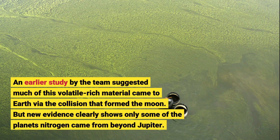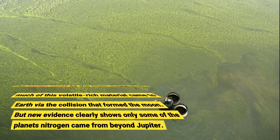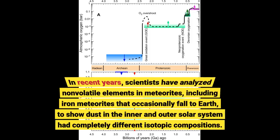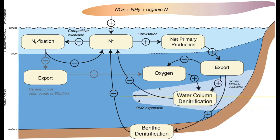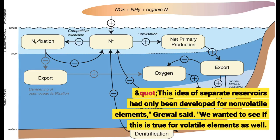But new evidence clearly shows only some of the planet's nitrogen came from beyond Jupiter. In recent years, scientists have analyzed non-volatile elements in meteorites, including iron meteorites that occasionally fall to Earth, to show dust in the inner and outer solar system had completely different isotopic compositions. This idea of separate reservoirs had only been developed for non-volatile elements, Grewal said.